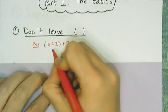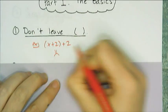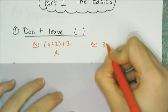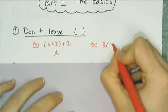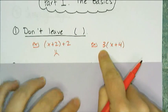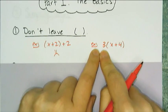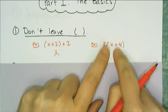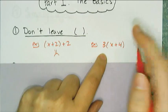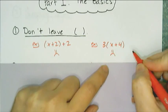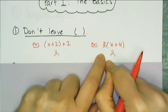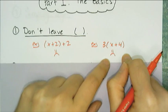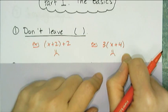Another example of something that is not simplified is something outside the parentheses, like 3 times the quantity (x + 4). You can't leave this either. We're going to use another property called the distributive property to simplify this one, which we'll talk about later.